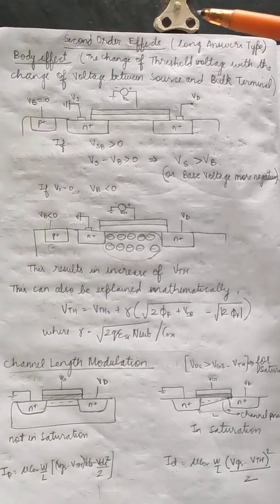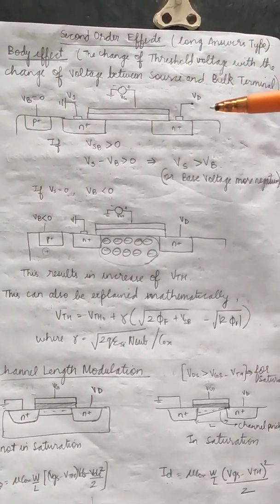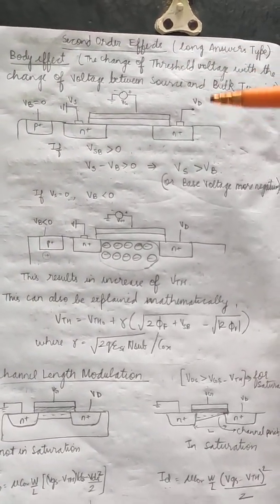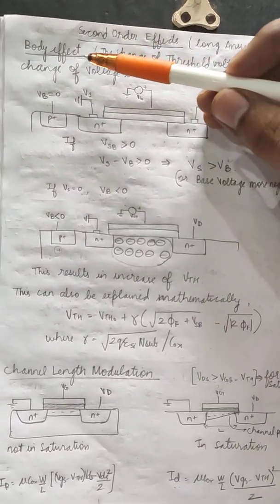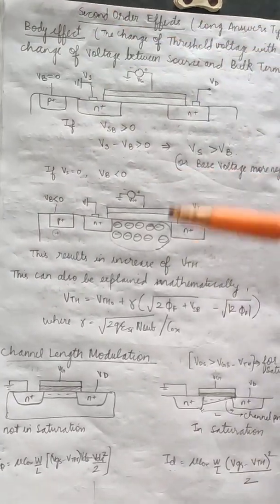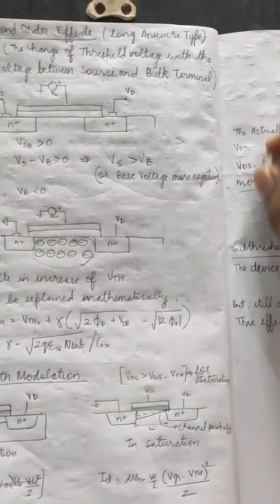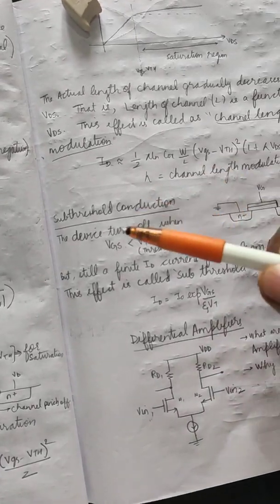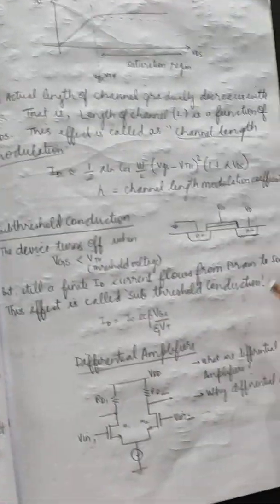This video is about the second-order effects. Basically there are three second-order effects: one is the body effect, one is the channel length modulation effect, and the other one is the sub-threshold conduction.